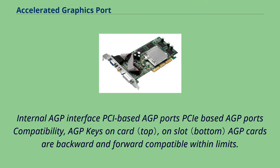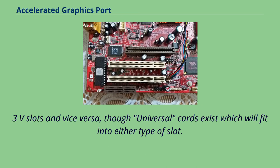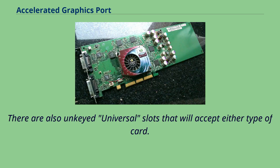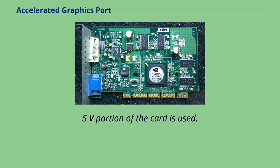AGP cards are backward and forward compatible within limits. 1.5V-only keyed cards will not go into 3.3V slots and vice versa, though universal cards exist which will fit into either type of slot. There are also unkeyed universal slots that will accept either type of card. When an AGP universal card is plugged into an AGP universal slot, only the 1.5V portion of the card is used.